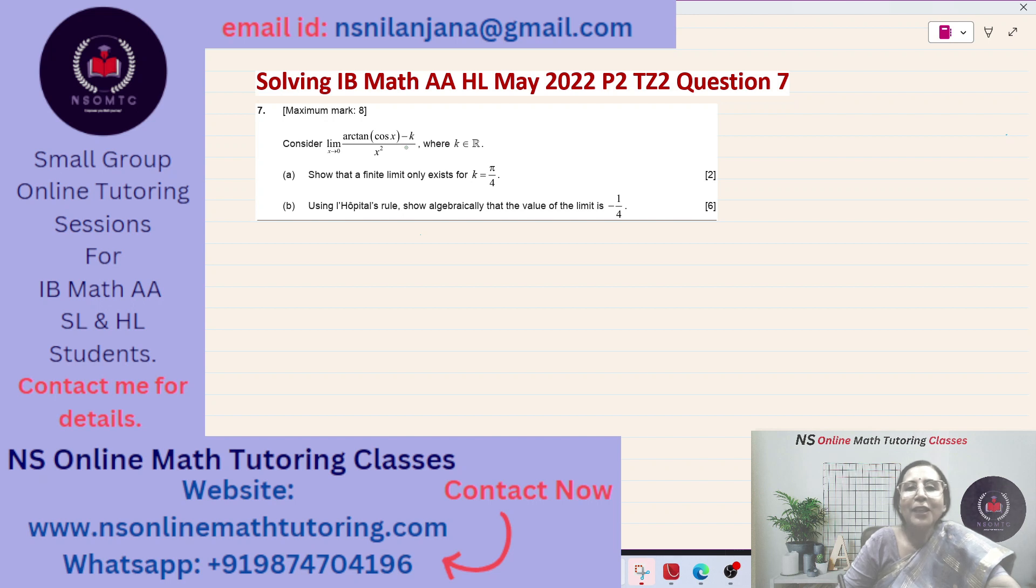Hello students, we are solving the IB Math AA HL past papers and currently we are solving the IB Math AA HL May 2022 Paper 2 TZ2 past papers. Today we will be solving question number 7 of this paper. You will be getting the links to all the previously solved questions of this paper and other papers in form of playlists in my channel NS Online Math Tutoring Classes. So without any further delay let us start answering question number 7, the maximum mark is 8.